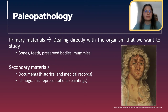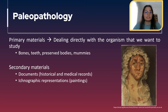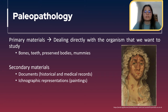In paleopathology we can divide our study material into primary and secondary. In the primary materials we are dealing directly with organisms that we want to study, for example bones, teeth, preserved bodies and mummies. On the other hand, there are secondary materials that can be documents like historical and medical records, and ethnographic representations, for example paintings.